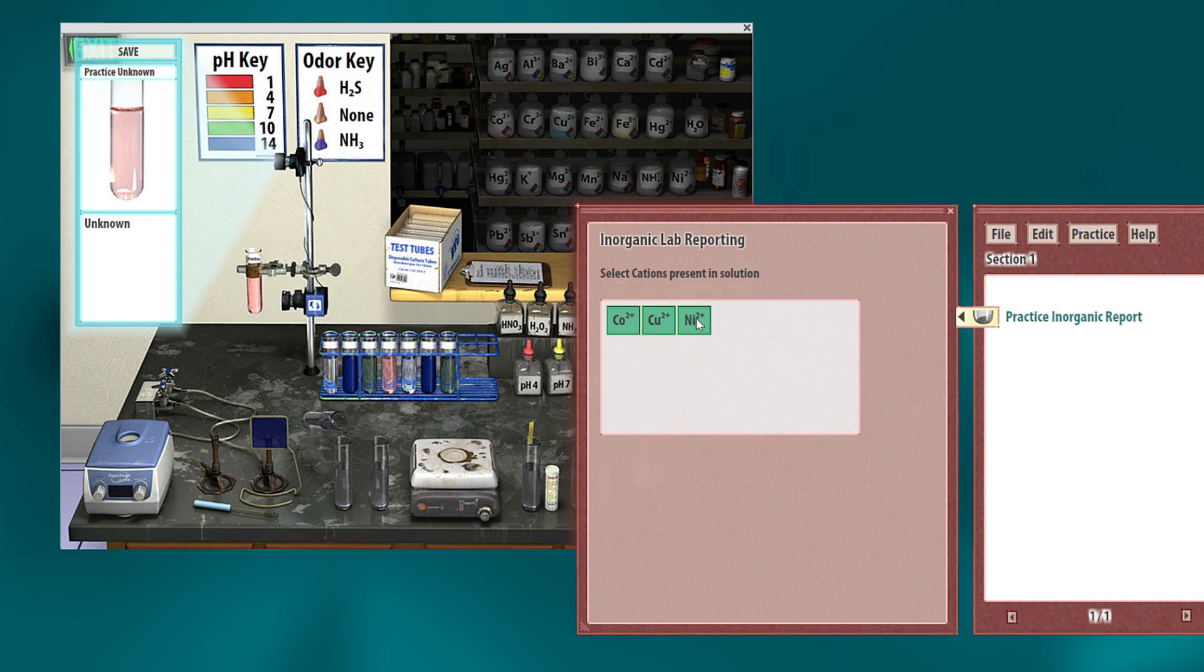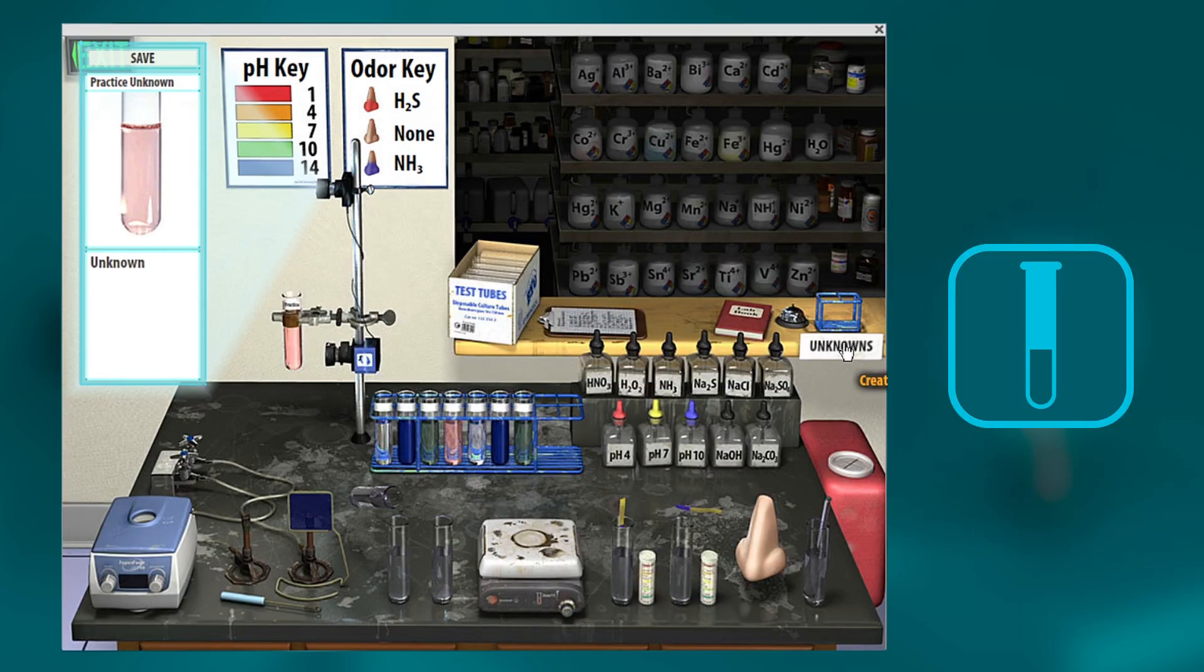And since all buttons turn green, it means you did the test right. You got it right. If you're still not confident, go back in, create another new unknown. Keep testing it as many times as you need. So then when you go into the real lab to do more qual analysis, you're ready.